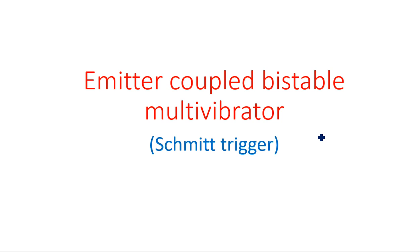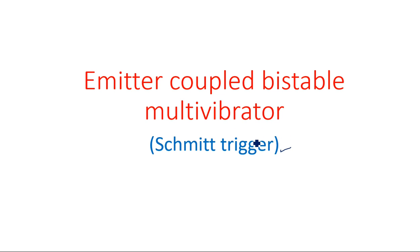In this video I am going to explain about the emitter coupled bistable multivibrator, mostly popularized with the name Schmitt trigger. The Schmitt trigger is used to convert any type of input waveform into a square waveform — that is the main application. Whatever the input waveform, whether sinusoidal, square, or triangular, the output is always a square waveform.